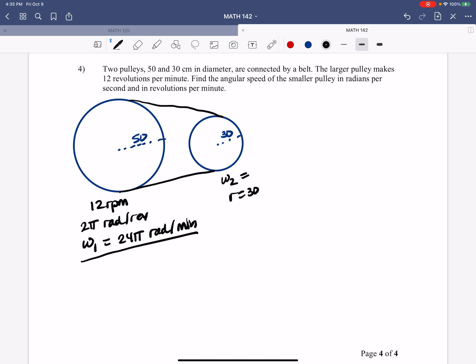So that means that 24 pi times omega 1, not times omega 1, times the radius. Actually, I'm going to write this differently here. I'm going to say that omega 1 times R1 is equal to omega 2 times R2.